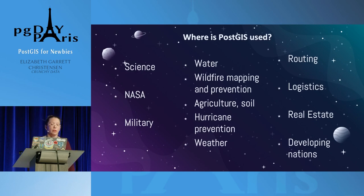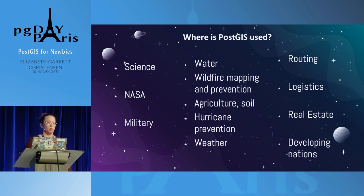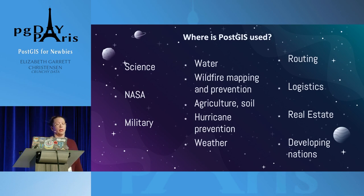PostGIS is used in a lot of places where maps and location data are used — the obvious things like mapping, the military, and NASA. But there are a lot of really cool PostGIS use cases out in the world: people mapping and keeping track of where our water goes, people working on hurricane prevention, a lot of routing, and people in developing nations using PostGIS for land planning. I've also seen some cool non-geospatial use cases — you can use PostGIS just as a spatial system for things like neural networking research.